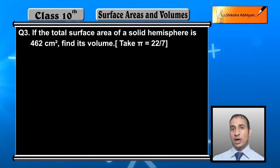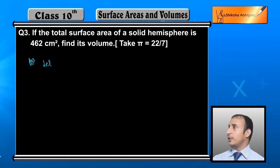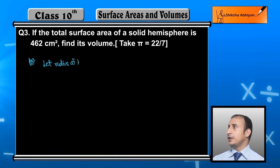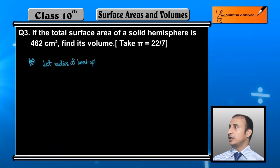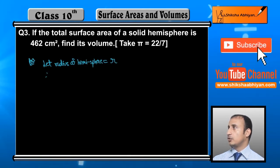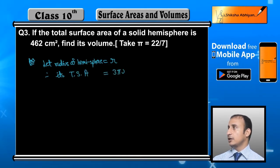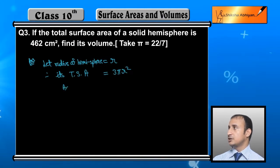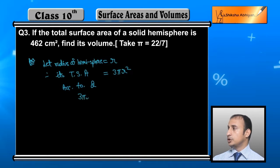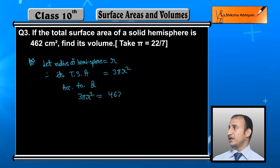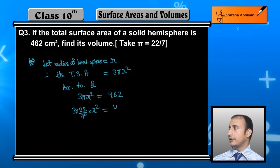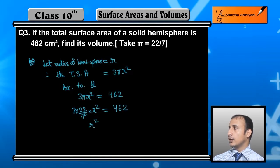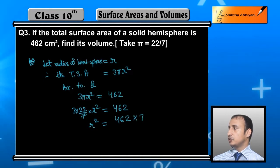We need to find the value of r because we need the radius to calculate the hemisphere's volume. The total surface area formula is 3πr². I will show you: substituting π = 22/7, we get 3 × (22/7) × r² = 462. So r² = 462 × 7 / (3 × 22).